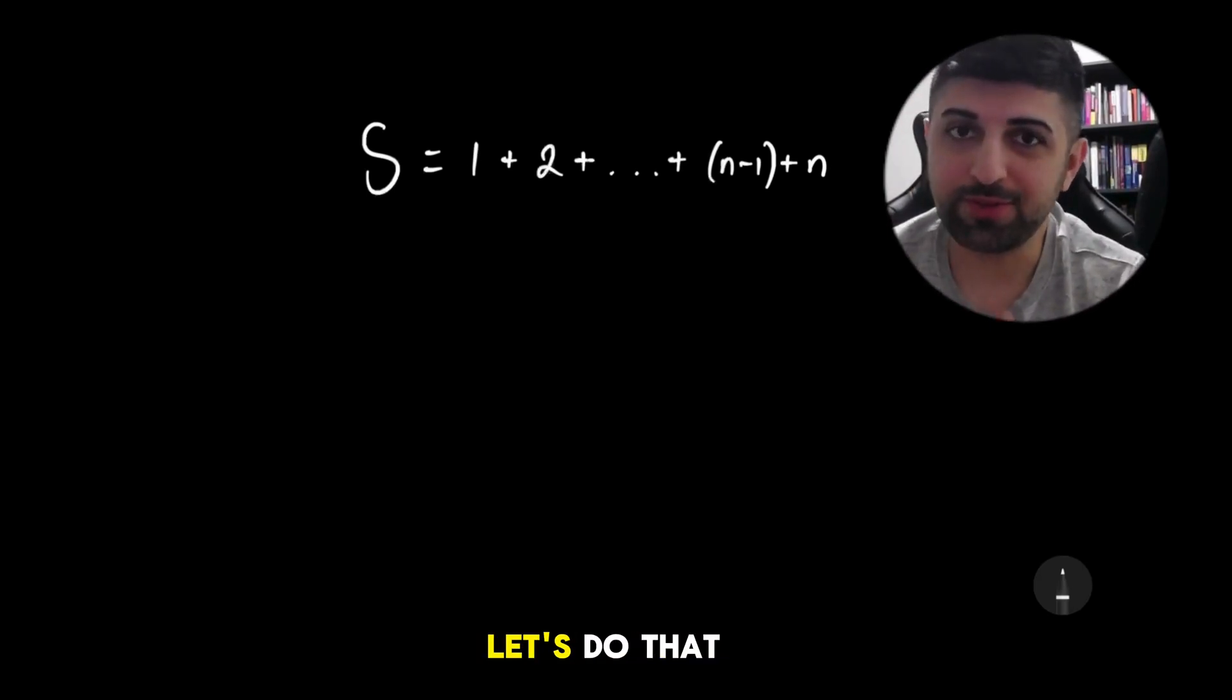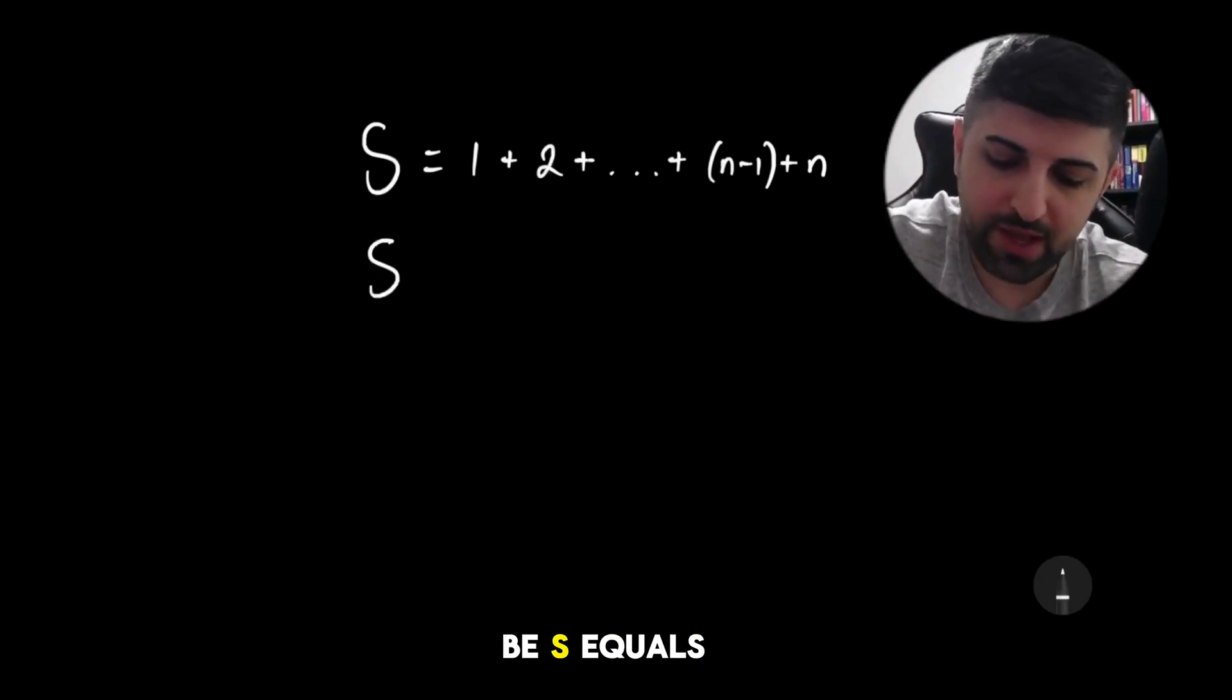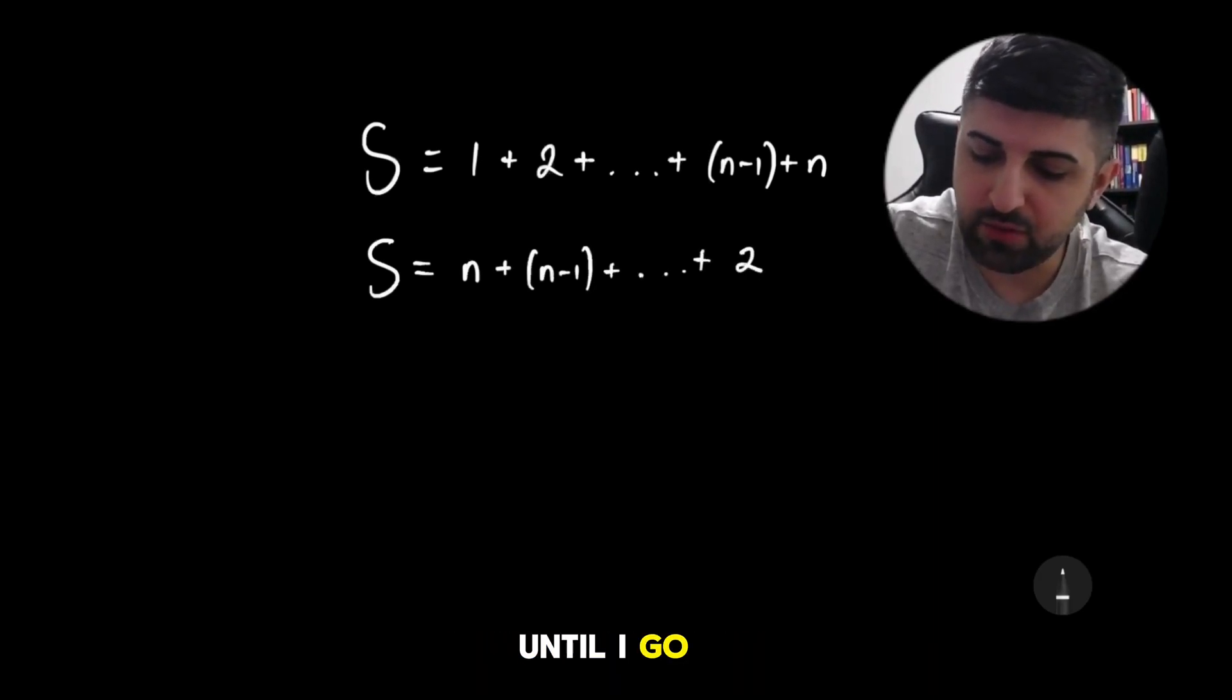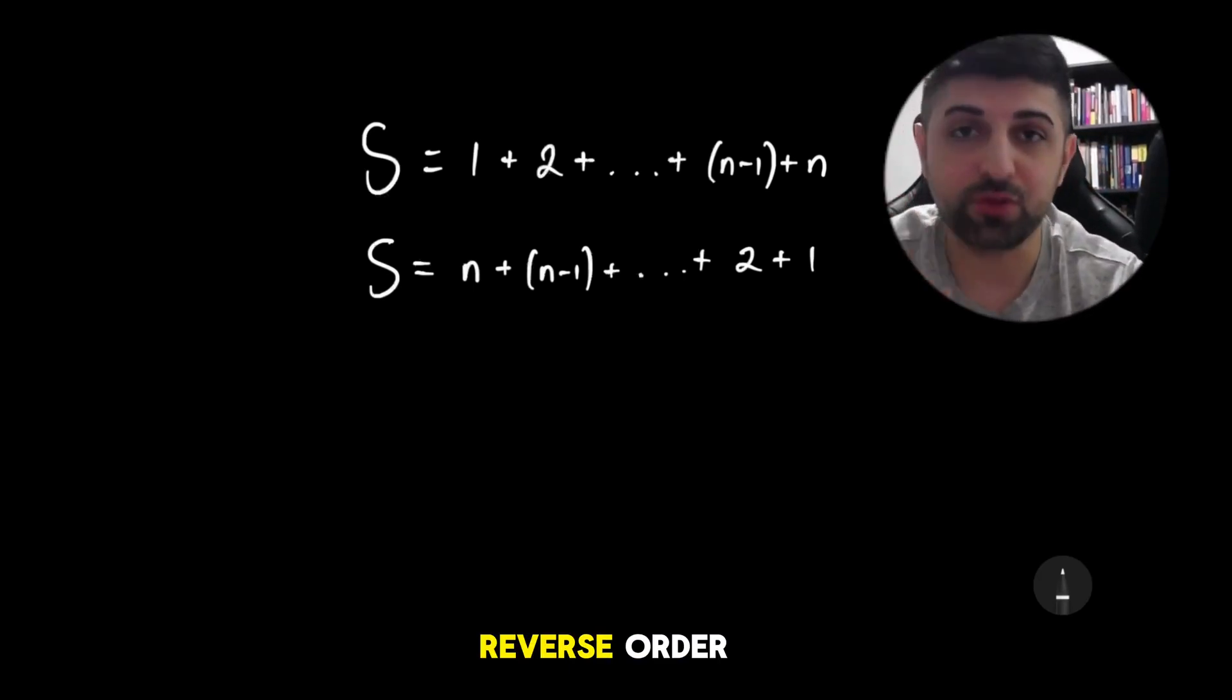I can also write it in reverse order. Let's do that now. So that would be S equals n to start plus n minus 1, and I can continue that sum until I go 2 plus 1, so it's the reverse order.